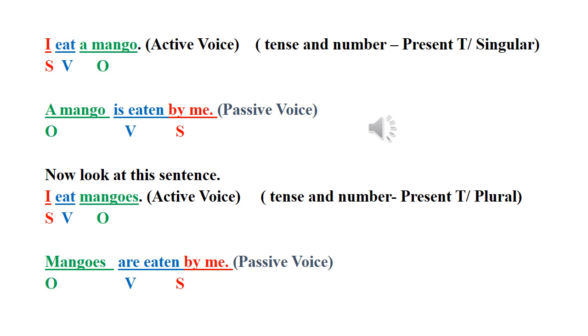A mango. We take the object to the front. A mango is eaten. We use the third verb form, past participle form is used here. Eaten. Can you remember? Eat, ate, eaten. Third verb form is what we use. Eaten.